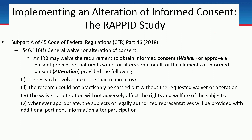This is a general waiver or alteration of consent, and it is really up to the IRB — the IRB can choose to approve the waiver or alteration depending on their comfort with the particular project. It needs to meet four different criteria. Number one: the research involves no more than minimal risk. Pretty much all retrospective chart review research falls under the waiver of informed consent. We are talking about this today in the context of human tissues or blood samples.